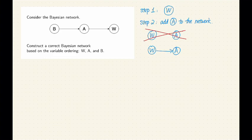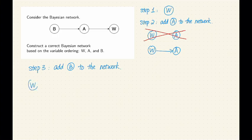Okay, so far so good. Let's look at step number three. Now we want to add B to the network. And we already have two nodes in the network. One is W, one is A.